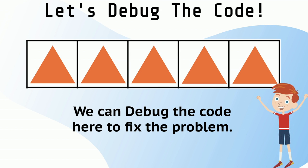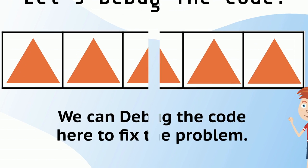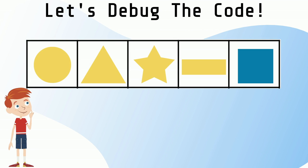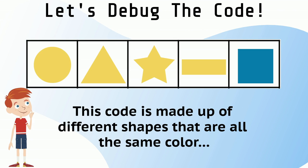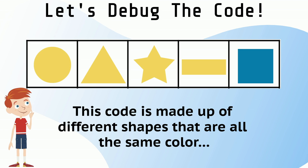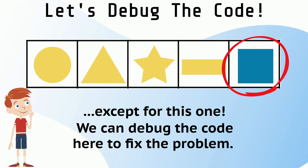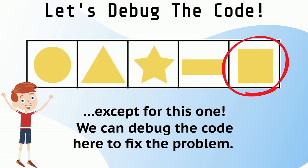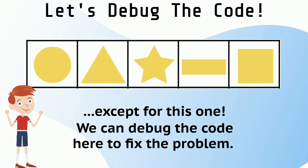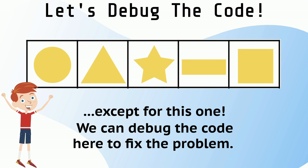Let's try another one. This code is made up of shapes that are all the same color, except for this one. We can debug the code here to fix the problem. Awesome! That looks great.